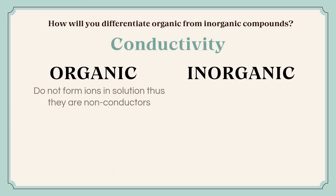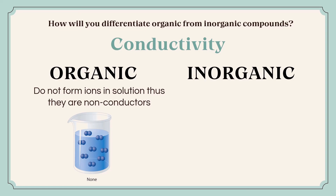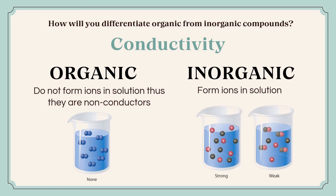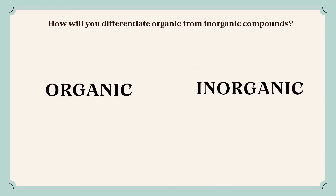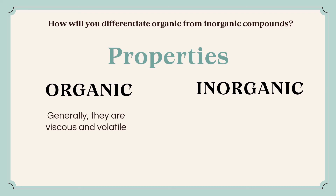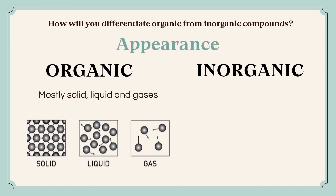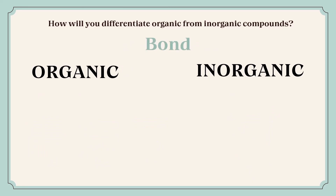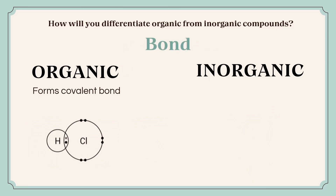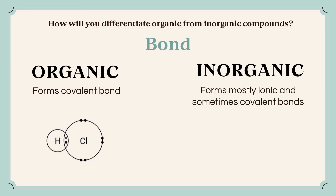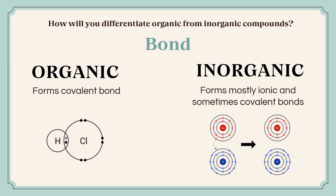When it comes to conductivity, organic compounds do not form ions in solution, thus they are not conductors, while inorganic compounds form ions in solution, therefore they are good conductors. When it comes to properties, generally organic compounds are viscous, volatile, and flammable, while inorganic compounds are not volatile and not viscous. When it comes to chemical bonding, organic compounds are formed through covalent bonds, while inorganic compounds can be formed through ionic or covalent bonds, but mostly ionic.